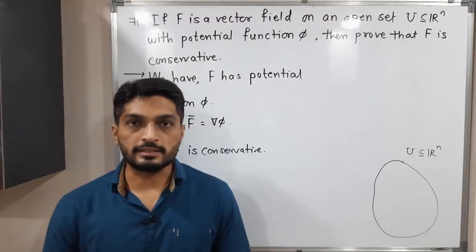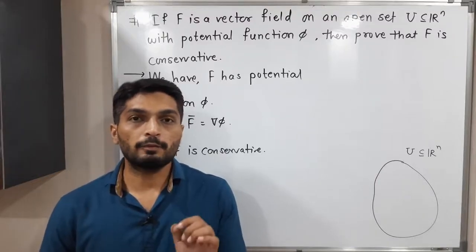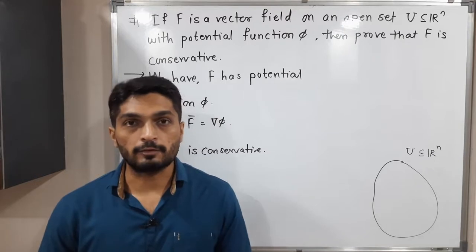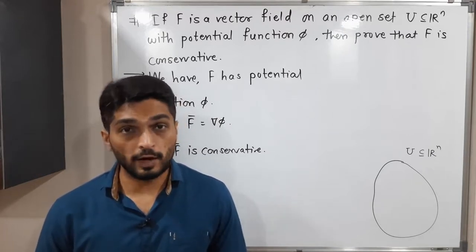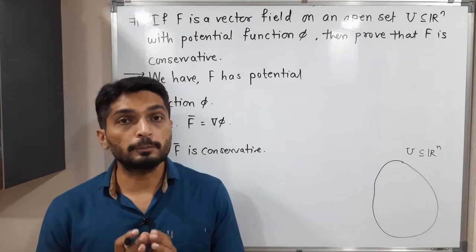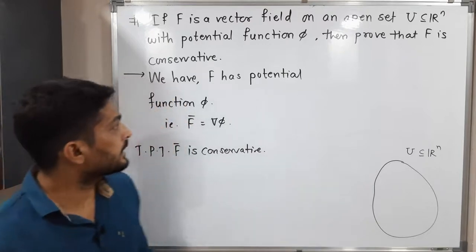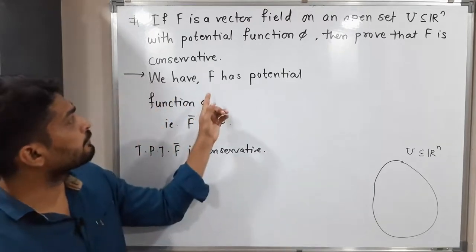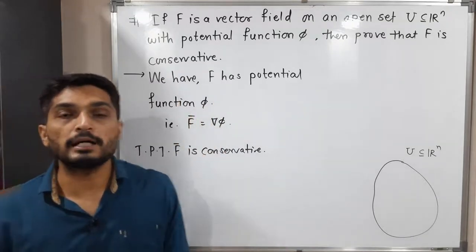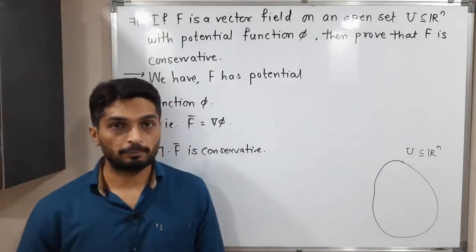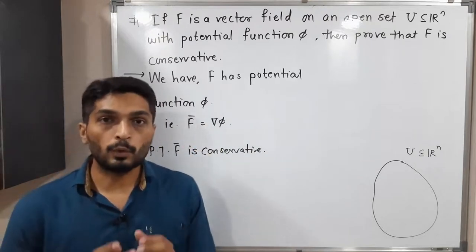Let us discuss this result. We have a vector field f. The given information is that f has a potential function phi, and we have to prove that f is conservative. Since f has a potential function phi, we write f-bar equals the gradient of phi, that is, f-bar equals del phi.